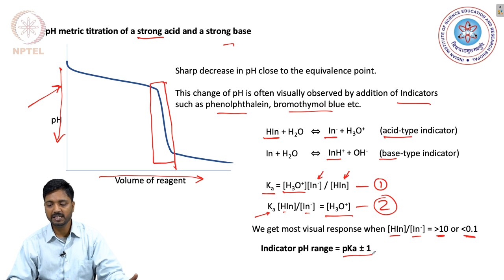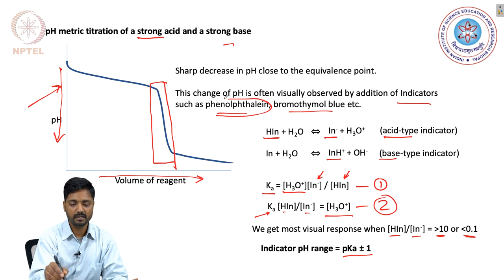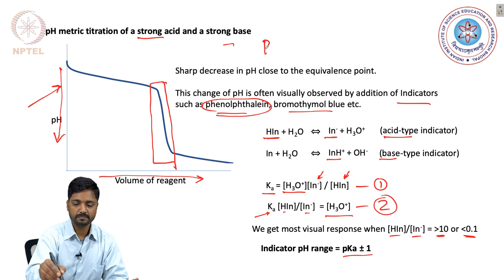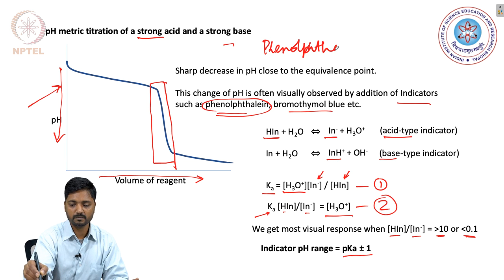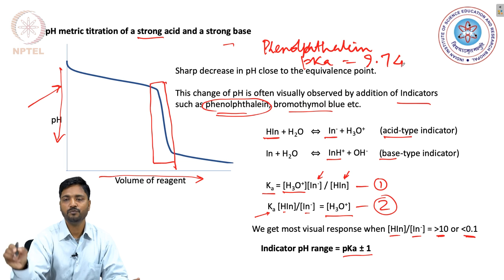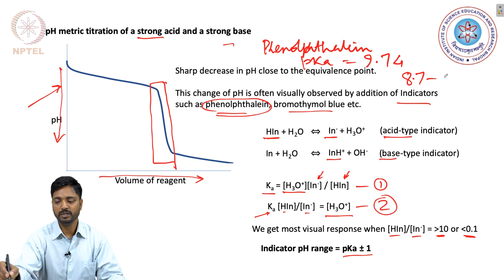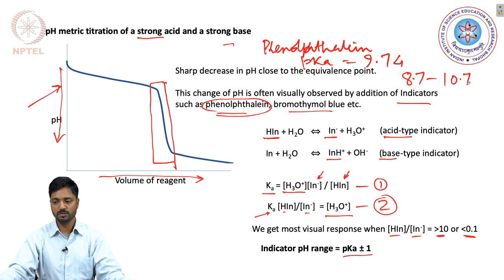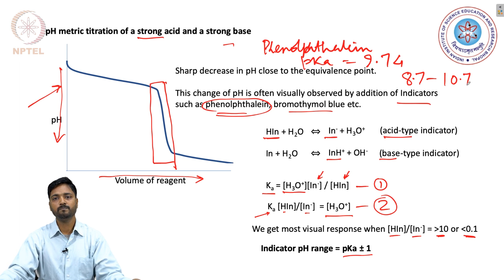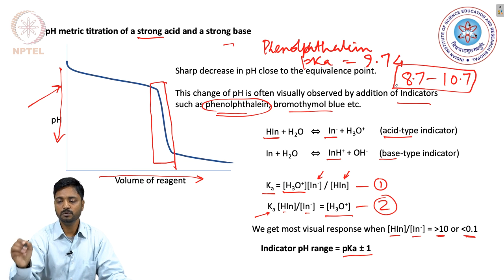Let us consider the most common acid-type indicator, which is phenolphthalein. Phenolphthalein is known to have a pK value of 9.74. This indicates that phenolphthalein will undergo the maximum colour change in the pH regime of 8.7 to 10.7. So phenolphthalein is a basic indicator and it will work best when the pH of the medium is basic and in the range of 8.7 to 10.7.